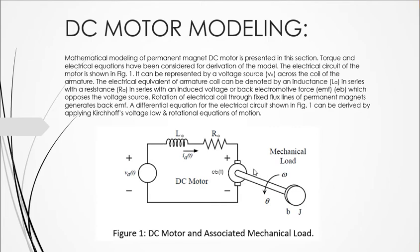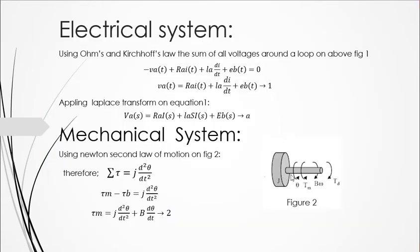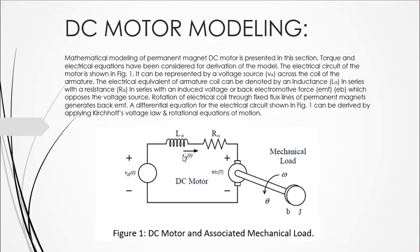The first is the motor shaft torque, then the mechanical load torque, and J is the inertia. The parameters are: J is the moment of inertia of the rotor, B is the motor viscous friction constant, TB is the friction torque, and TM is the motor torque. These two torques are basically opposite to each other. This is the electrical system and this is the mechanical system.